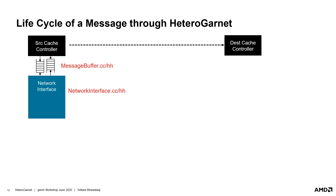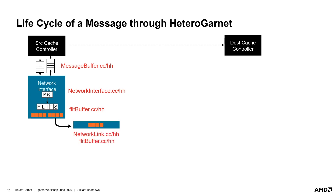Next, a network interface connected to the cache controllers through these message buffers receives the messages. The network interface notes the message size and appropriately converts the message into flits, which are then stored in outgoing flit buffers. Heterogarnet allows multiple outgoing links from a network interface, each going to a different destination, so there could be multiple outgoing flit buffers. Next, the network link responsible for transmitting the flit wakes up and stores it in a flit buffer of its own. The latency of this operation can be configured through the latency parameter. In this example, the link is an external link.